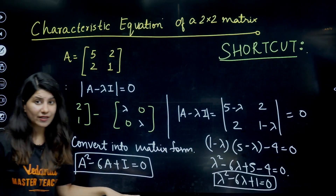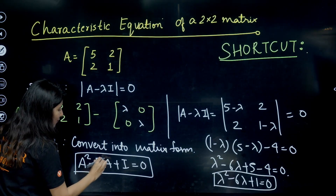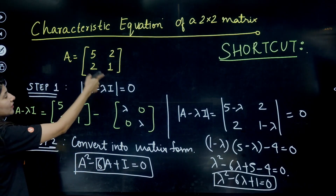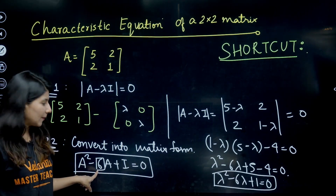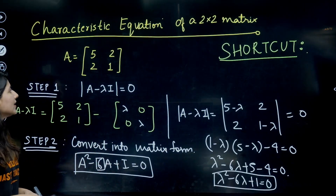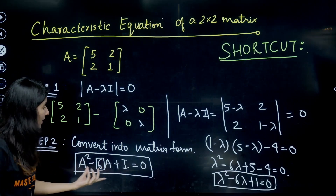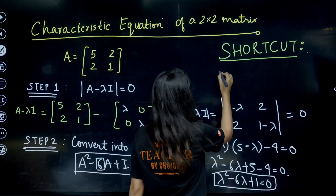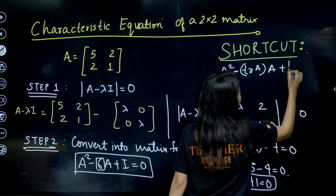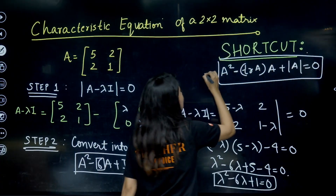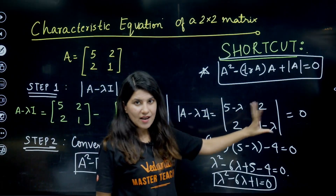Now the shortcut: observe that the coefficient 6 is exactly the trace of matrix A (5+1 = 6), and the constant 1 is the determinant of A (5×1 − 2×2 = 1). So directly you can write: A² − trace(A)·A + det(A)·I = 0. You don't have to perform all the intermediate steps.